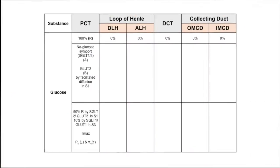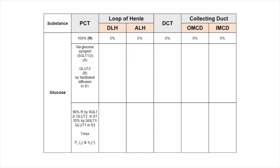About 90% of filtered glucose is reabsorbed by SGLT2 in the S1 segment of the proximal tubule, and the residual 10% by SGLT1 in the S3 segment. Glucose diffuses out with the help of glucose transporters GLUT2 in the S1 segment and GLUT1 in the S3 segment of the proximal tubule.